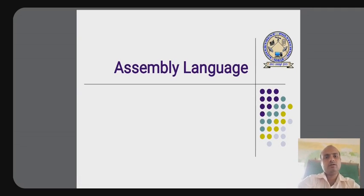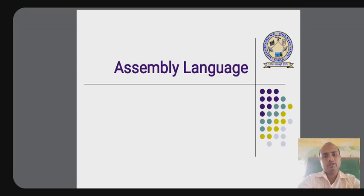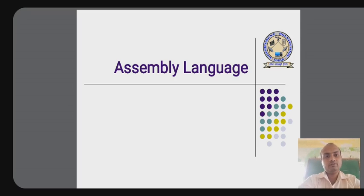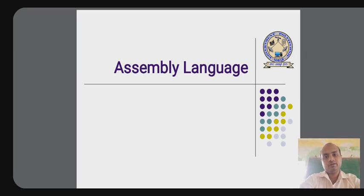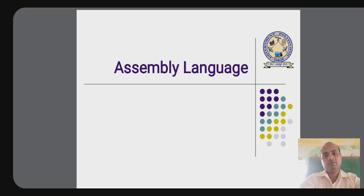There are three different types of computer languages. One is machine language, the second is assembly language, and the third is high level languages. Machine language contains only binary values, that is 0 or 1. The computer understands only machine language.